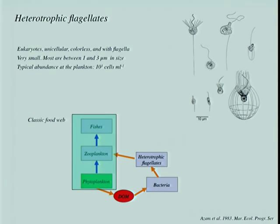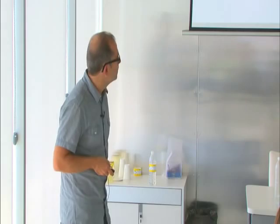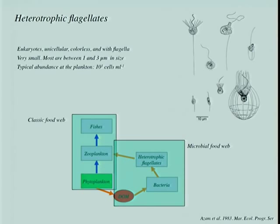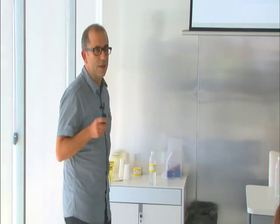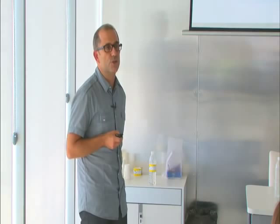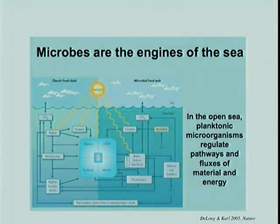But there is another energy pathway in marine systems where part of primary production is released as dissolved organic matter. This dissolved organic matter is food for heterotrophic bacteria, which are eaten by heterotrophic flagellates, and those are incorporated back into the classical food web. This is what is called the microbial food web. Microbes are the engines of the sea — they regulate the pathways of fluxes and organic matter in the oceans and participate in all biogeochemical cycles including the carbon, nitrogen, and sulfur cycles.